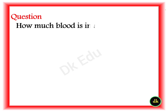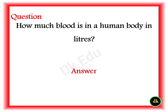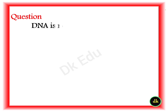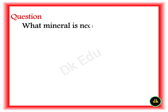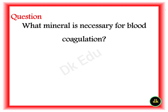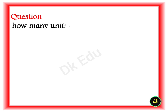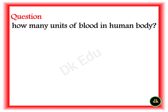Q: How much blood is in a human body? A: Approximately five liters. Q: DNA is not present in which cell component? A: Ribosomes. Q: What mineral is necessary for blood coagulation? A: Calcium. Q: How many units of blood are in the human body? A: 10 units.